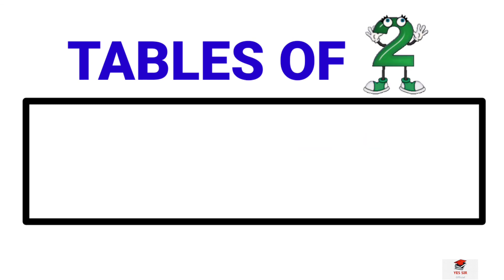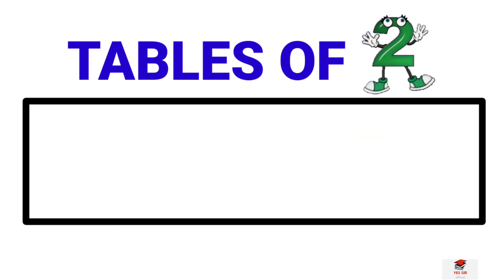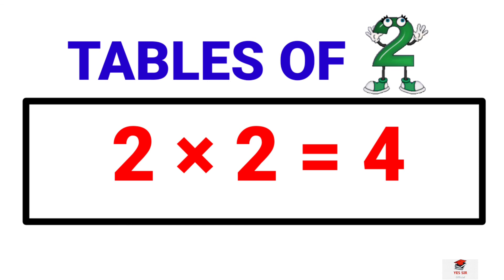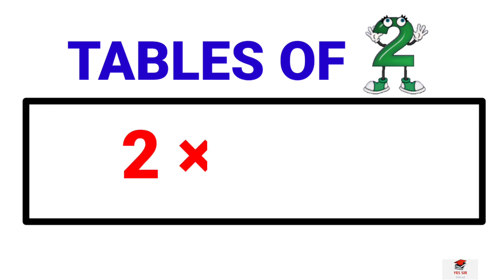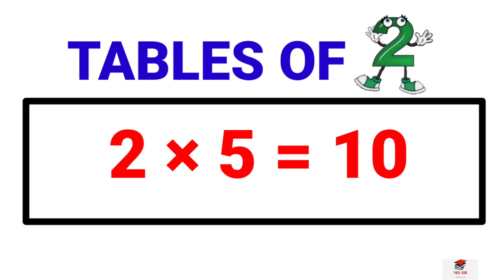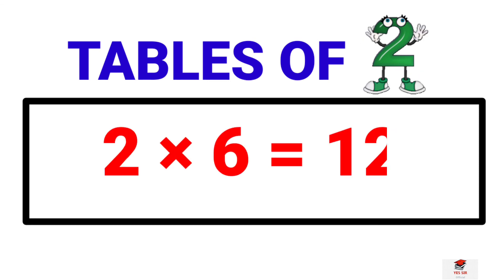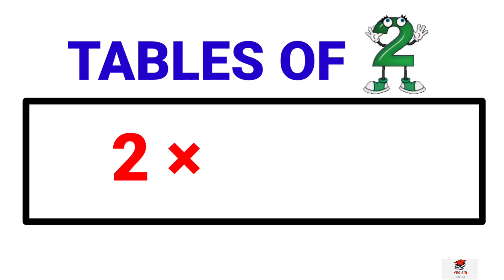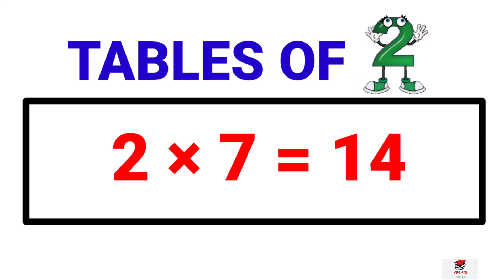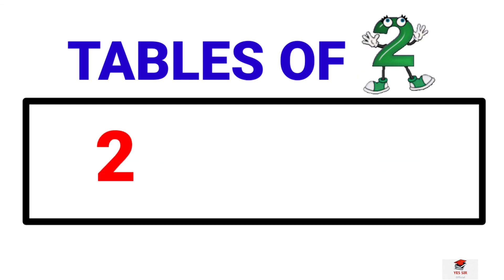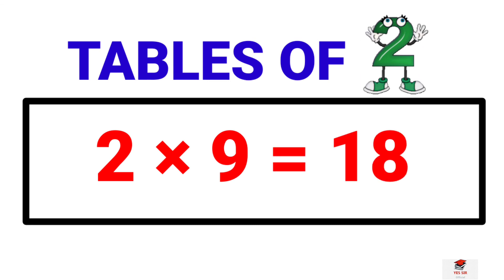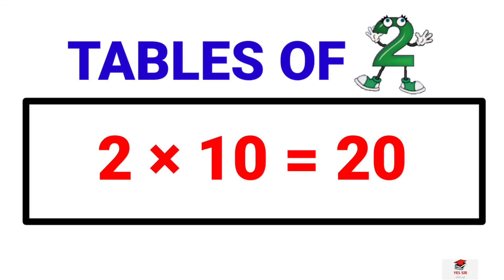Next, table of 2: 2 ones are 2, 2 twos are 4, 2 threes are 6, 2 fours are 8, 2 fives are 10, 2 sixes are 12, 2 sevens are 14, 2 eights are 16, 2 nines are 18, 2 tens are 20.